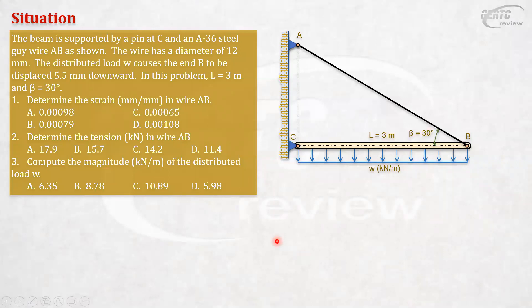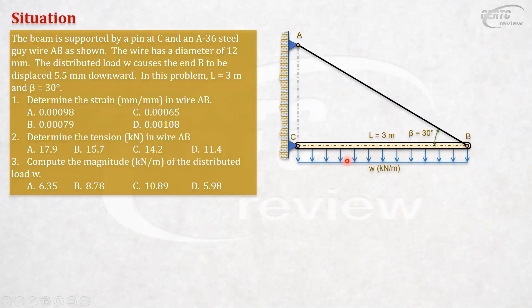The beam is supported by a pin at C, and it's a rigid beam. There is an 836 high-strength guy wire AB. The wire has a diameter of 12 mm. The distributed load W causes the end B to be displaced 5.5 millimeters downward. Our L is 3 meters, and our beta is 30 degrees.